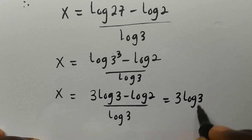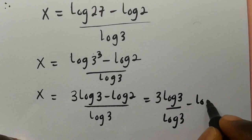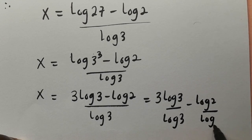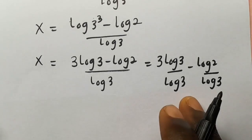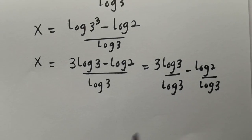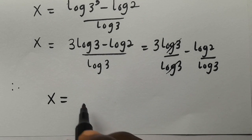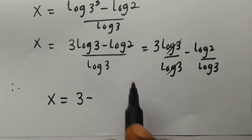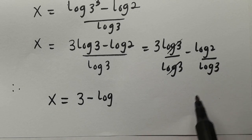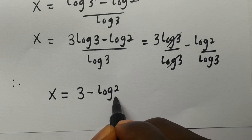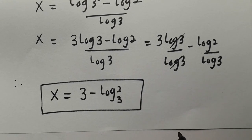This log 3 cancels log 3, so therefore we have our x finally equals 3 minus log 2 divided by log 3, which can also be written as 3 minus log base 3 of 2. This is the final answer for the value of x.